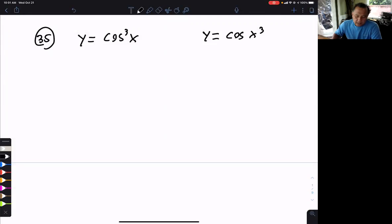So number 35, we want you to understand the notation. You have to understand this one here is actually cosine of x being brought to the third, and this one here is cosine of x cubed. So that's the difference between those two.